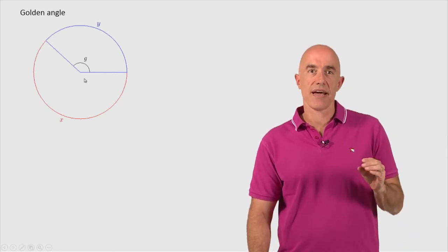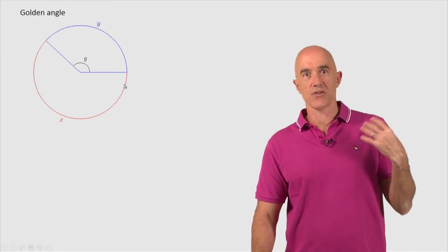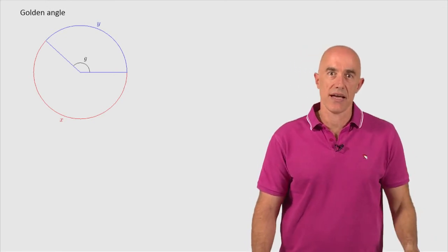If we draw this angle so that x and y are in the golden ratio, then we say that g is the golden angle.